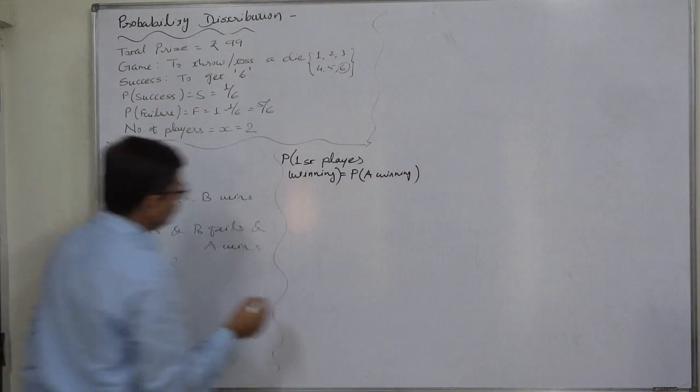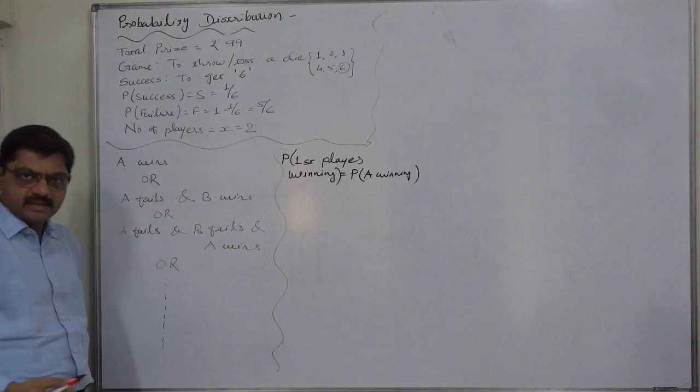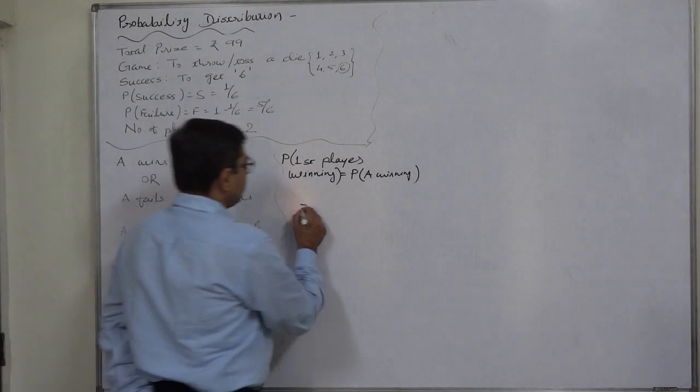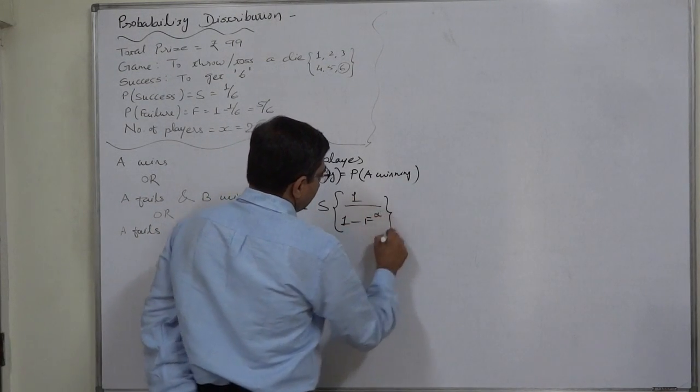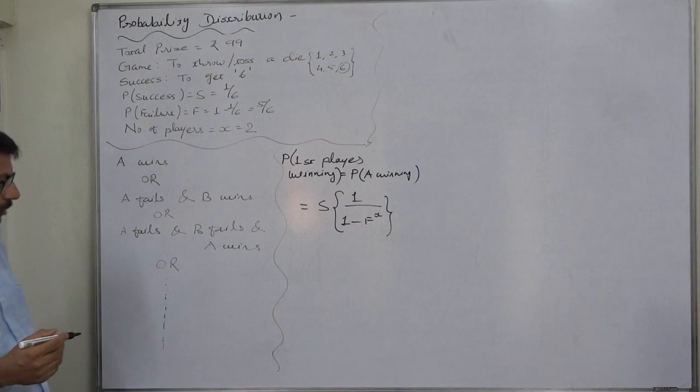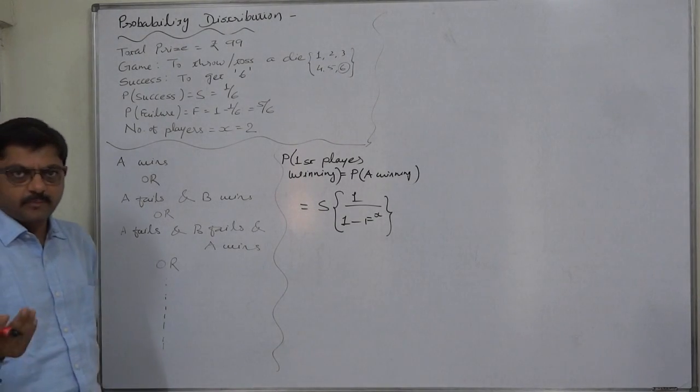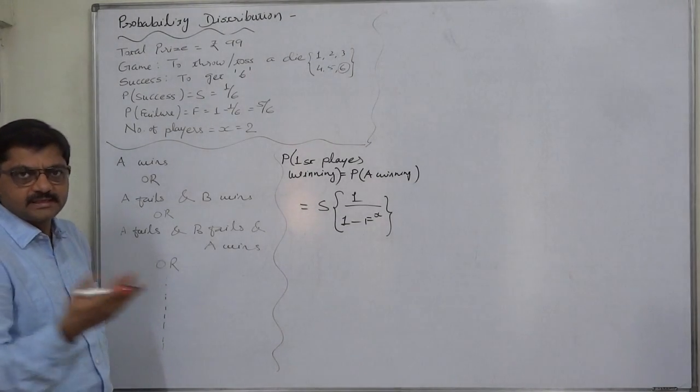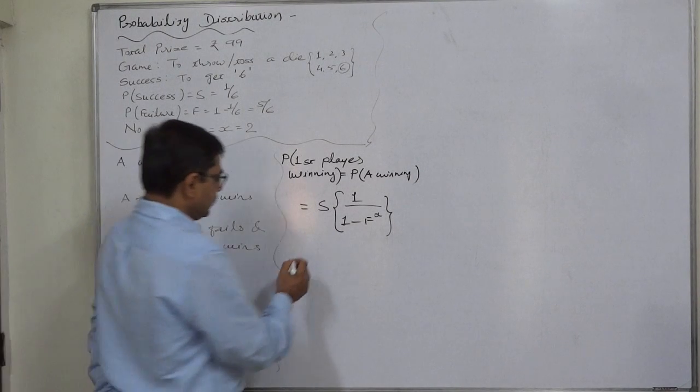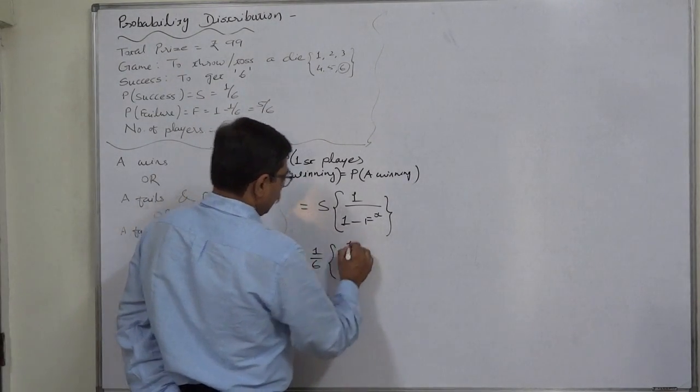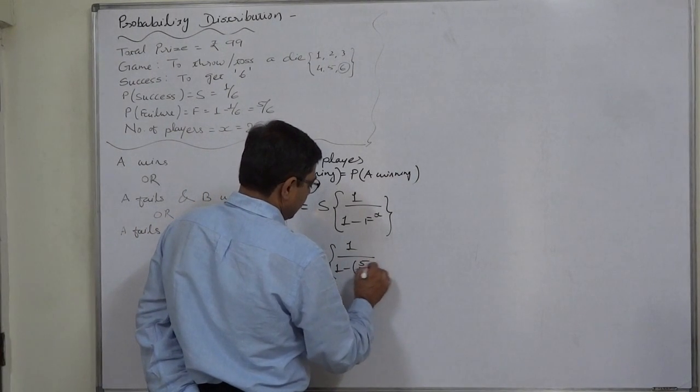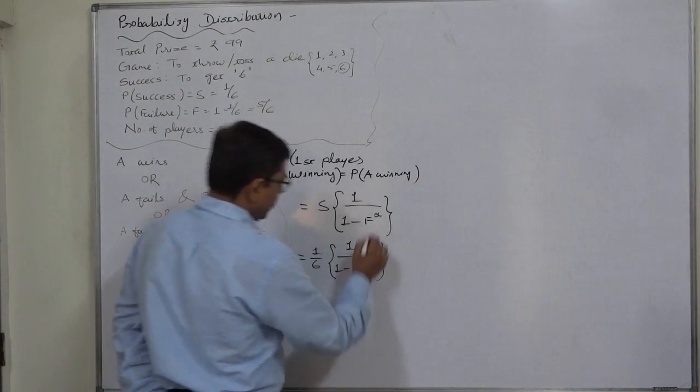And in case of summation of infinite geometric series, the formula can be, that is nothing but the derived formula in case of geometric progression, we all have studied this in mathematics. So it is 1 by 6, 1 by 6 into 1 upon 1 minus 5 by 6 rest to 2, that is number of players.